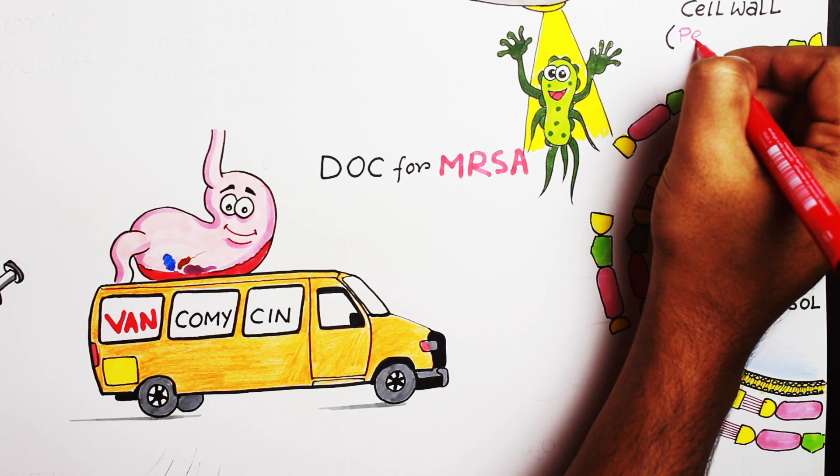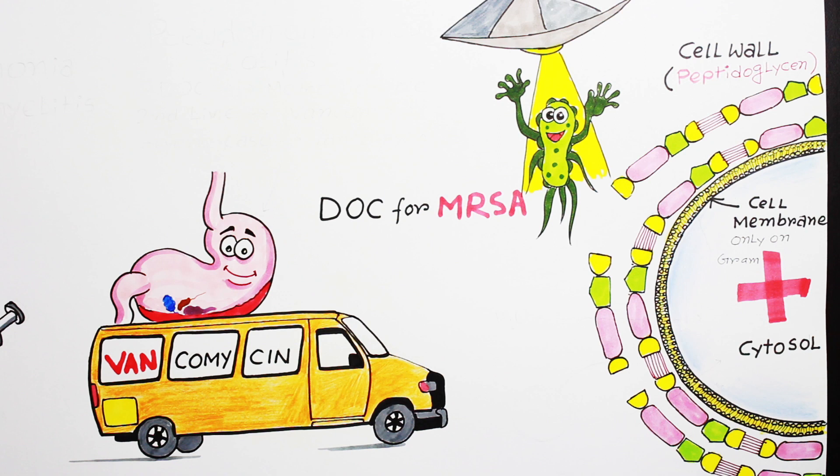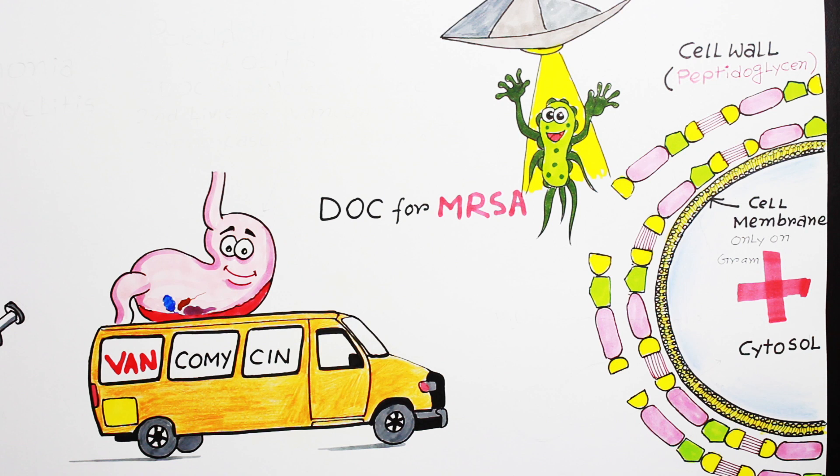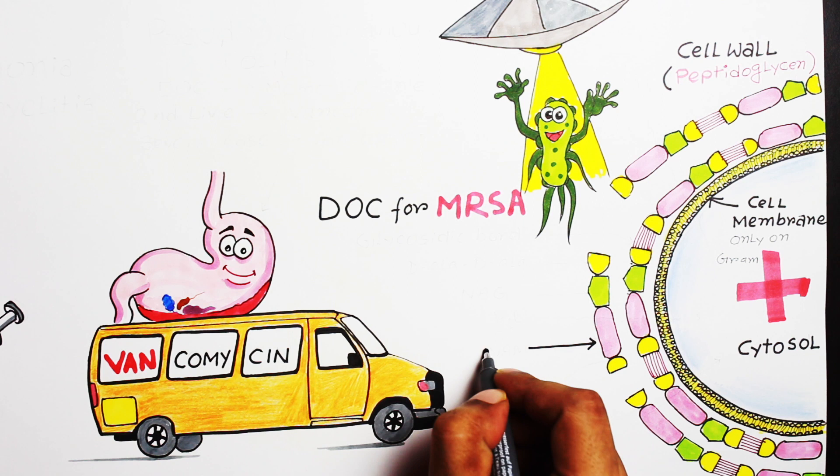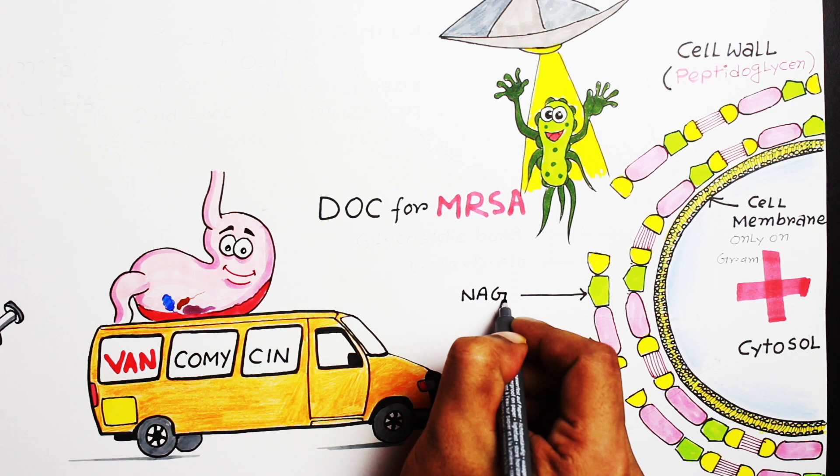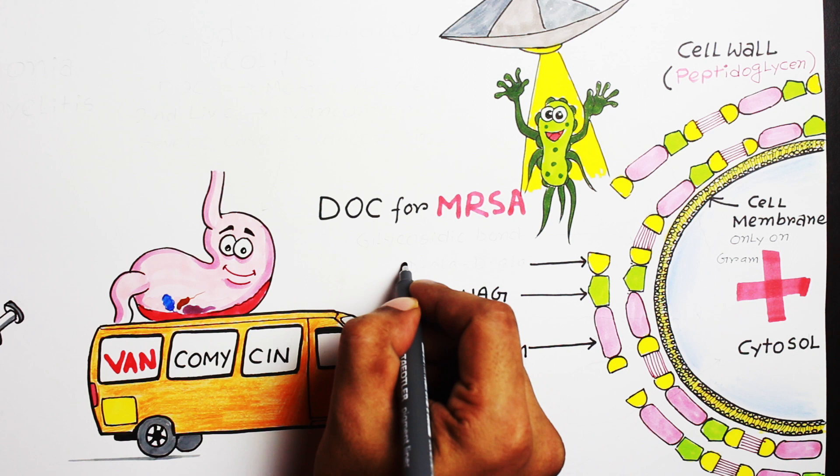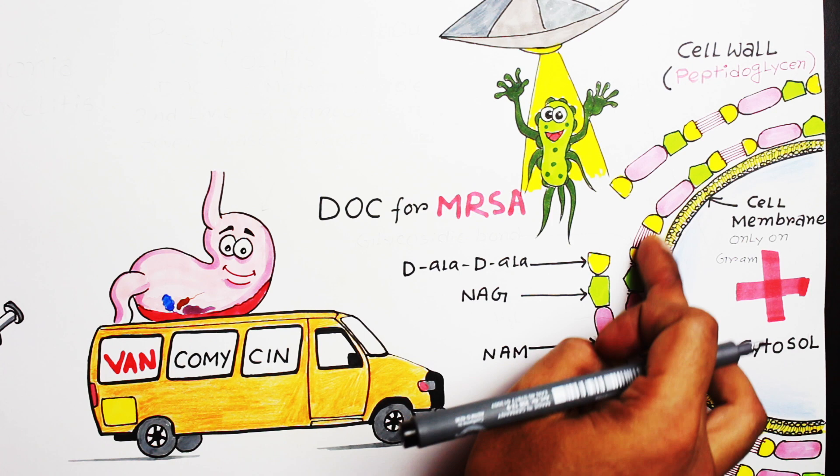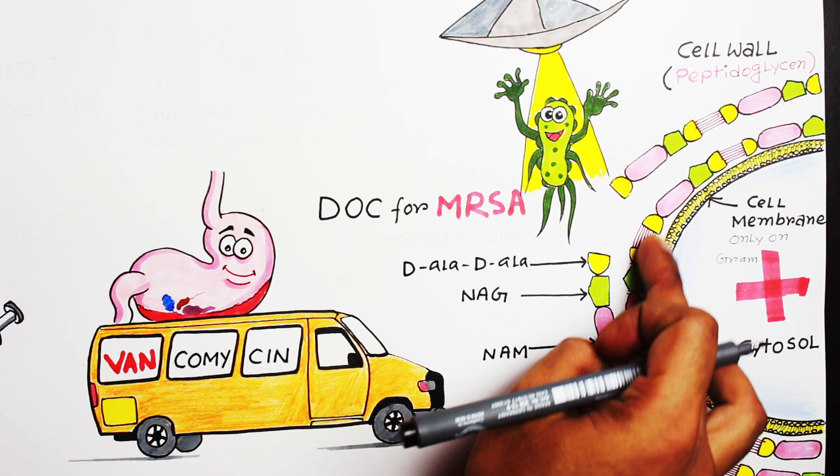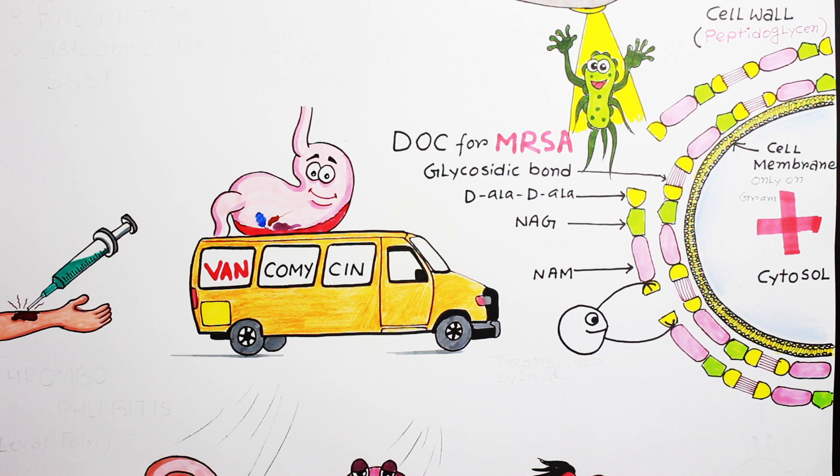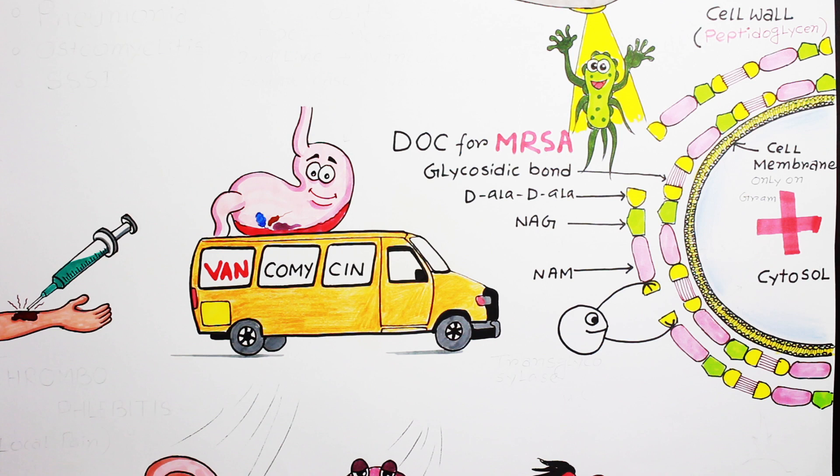Cell wall is made up of peptidoglycan. The structural unit of peptidoglycan is the NAM-NAG unit. NAM stands for N-acetyl muramic acid and NAG stands for N-acetyl glucosamine. Every NAM-NAG unit has D-alanine-D-alanine terminus, which is the amino acid side chain. Two separate NAM-NAG units are cross-linked with each other by glycosidic bond between two D-alanine-D-alanine portions. One special enzyme helps in this process named transglycosylase.